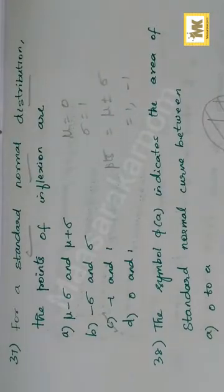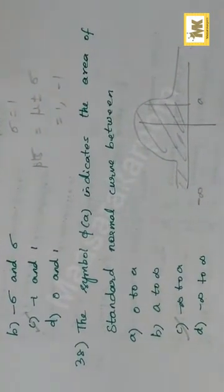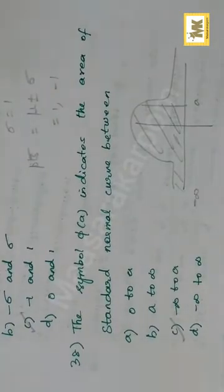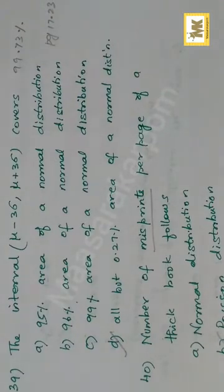The symbol phi of a indicates the area of the standard normal curve between minus infinity to a. The interval mu minus 3 sigma to mu plus 3 sigma covers 99.73 percentage of the normal curve. It covers all but 0.27. Right option is D - it covers 99.73, that is 100 minus 0.27 percentage area.